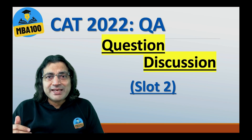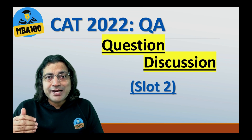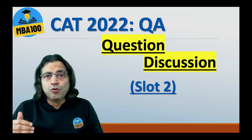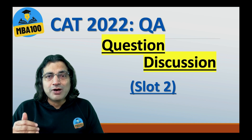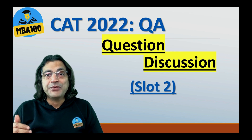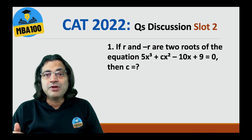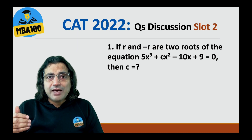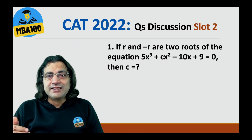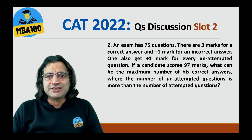Hi, the only purpose of taking this short session is to give you accurate answers to all 22 quantitative aptitude questions that appeared in slot 2 of CAT 2022. Here we have the first question and the answer is minus 9 by 2. Almost everyone has given you this answer.